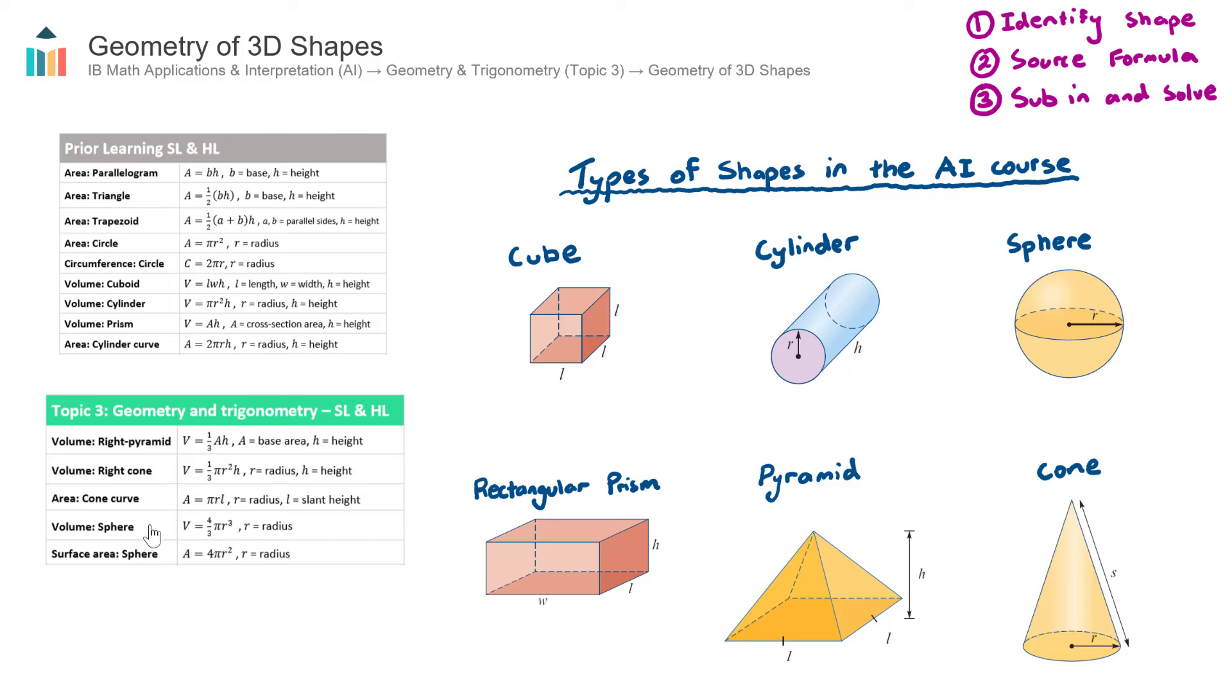Now in the AI course there are six main types of 3D shapes that you'll encounter. They are cubes, rectangular prisms, cylinders, pyramids, otherwise known as right pyramids, spheres and also hemispheres, which is just half a sphere, and cones. There are a few other types of shapes that may appear, such as triangular prisms perhaps, or maybe some other types of prisms, but these are the main six.